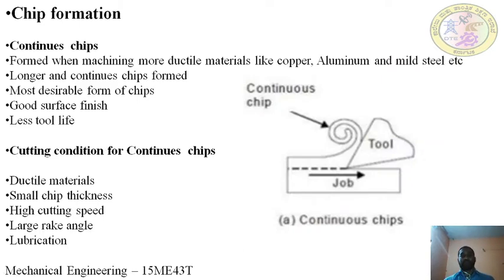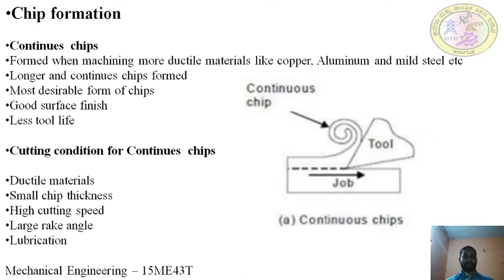In the last class, we studied the basics of metal removal process — removing unwanted metal from the workpiece to give the required shape and size. Metal is removed in the form of chips. Mainly, there are three kinds of chips: continuous chips, discontinuous chips, and continuous chips with built-up edges. Today we cover chip formation, cutting conditions, and advantages for each type.